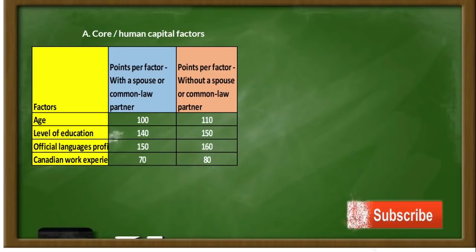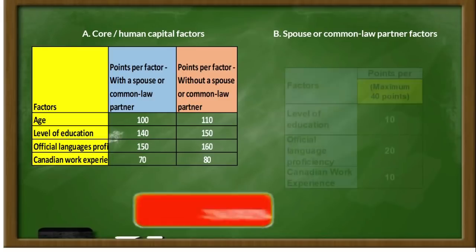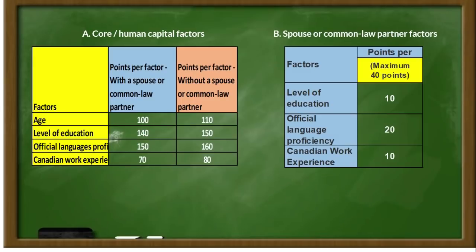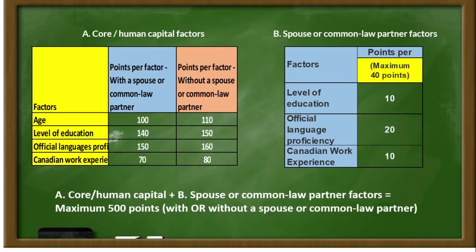The second factor is spouse and common-law partners. If you are without a spouse, you will see 4 sub-factors with extra points: level of education gives 10 extra points, language proficiency gives 20 extra points, and Canadian work experience gives 10 extra points — totalling 40 extra points. Combined, the first human capital factors and spouse factors give a maximum of 500 points, depending on your case.